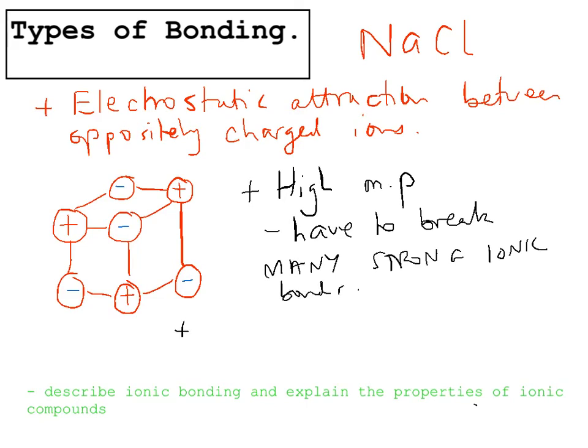It also does not conduct electricity when it's solid. That's because for a substance to conduct electricity it has to have charged particles that can move. Now an ionic compound does have charged particles as these positively negatively charged ions, but in a solid they can't move because they are bonded together. So in a solid they cannot conduct electricity as ions cannot move.